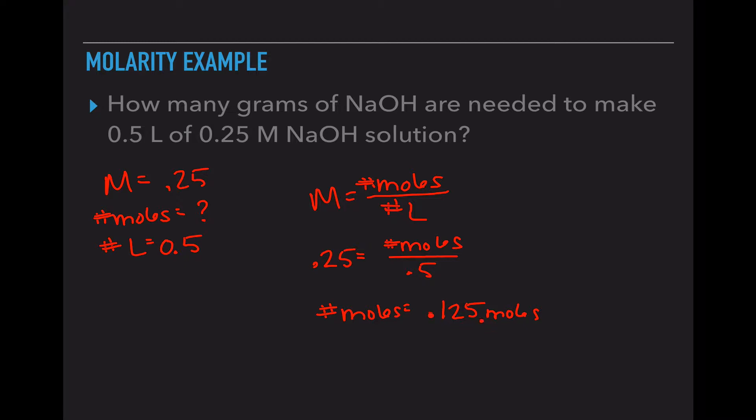Now this isn't the end of the problem. They asked how many grams are present. So we are now going to take the equation from the last unit and use number of moles equals sample mass over molar mass. Molar mass is NaOH, so Na is 23, O is 16, and H is 1, so our molar mass is 40.